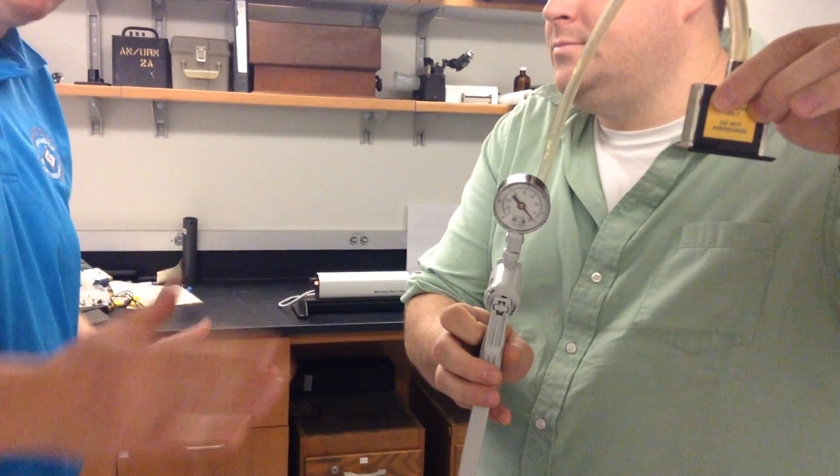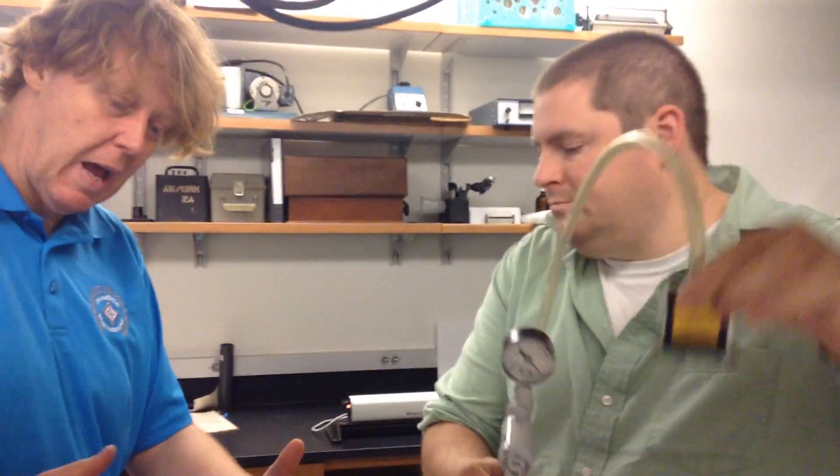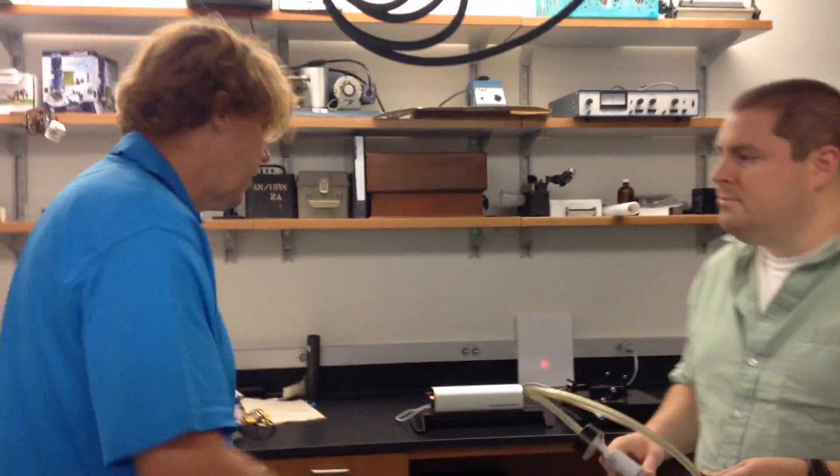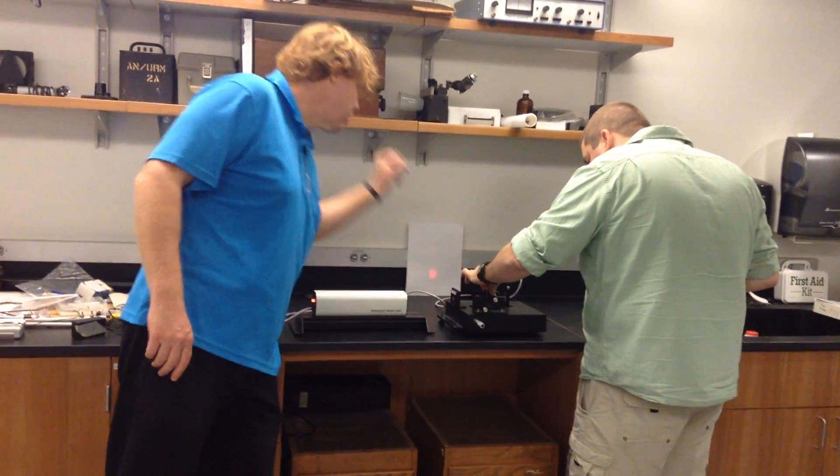So when we remove air, we make the index of refraction closer to one. And when we do that, fewer wavelengths fit in. Then our criteria for interference has changed, and so we'll see fringes.